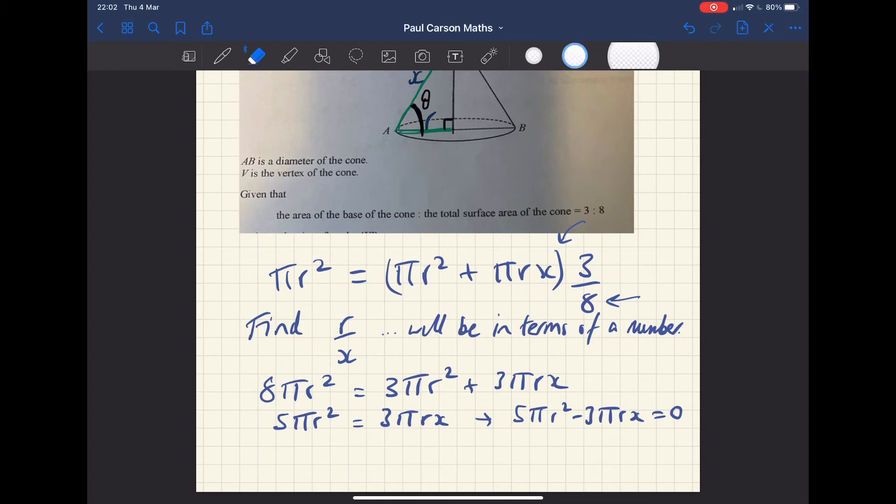Whoops, done that wrong. Start again. πr is going to be 5r - 3x equals zero. So we've got two options here. Either πr equals zero or 5r - 3x equals zero.